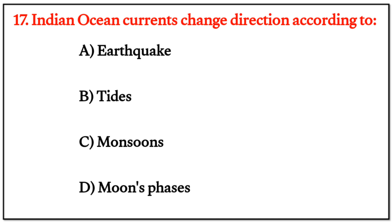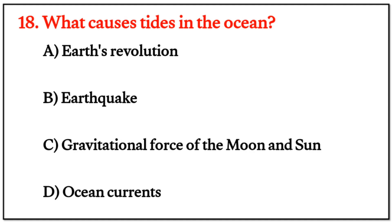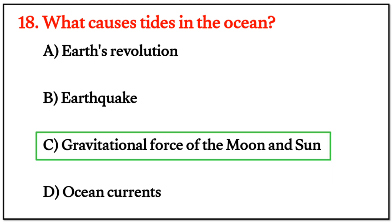MCQ Question 16 answer: the right option is C. Question 17: The right answer is C: Monsoons. Question 18: What causes tides in the ocean? The right answer is C: gravitational force of the moon and sun.